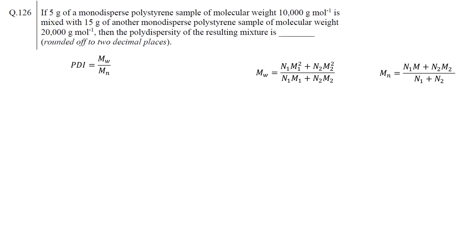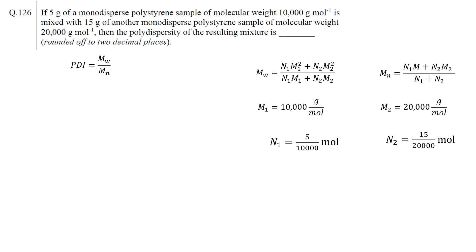In order to calculate weight and number average molecular weight, we need the number of chains with a specific molecular weight. The respective weight of polymer and molecular weight of polymer is given. From the weight, we can calculate the moles of chains present in 5 grams of the first sample and 15 grams of another sample. Moles are sufficient for this question.